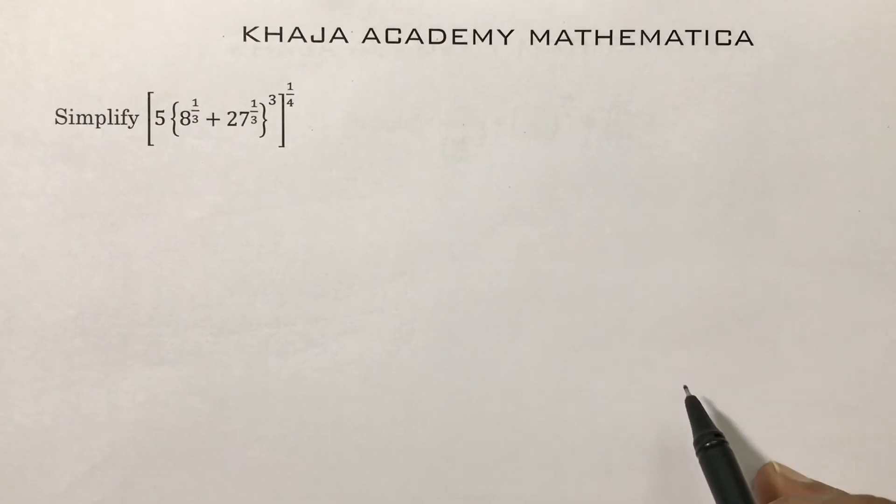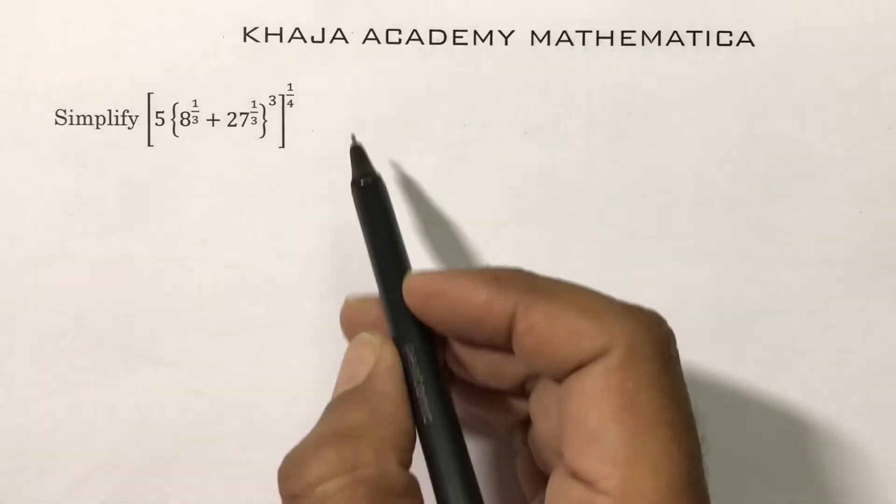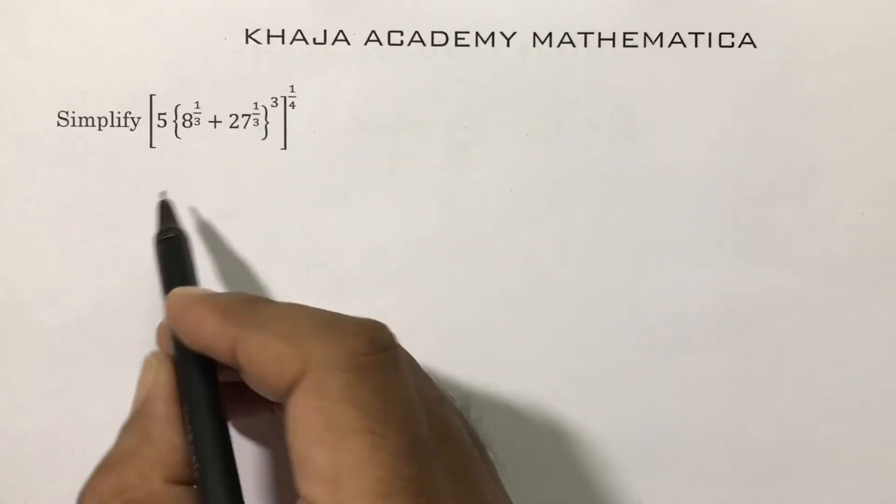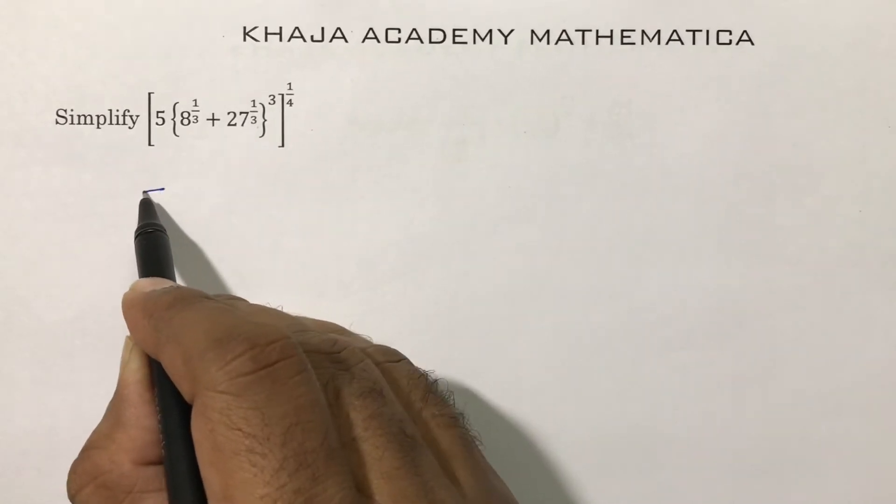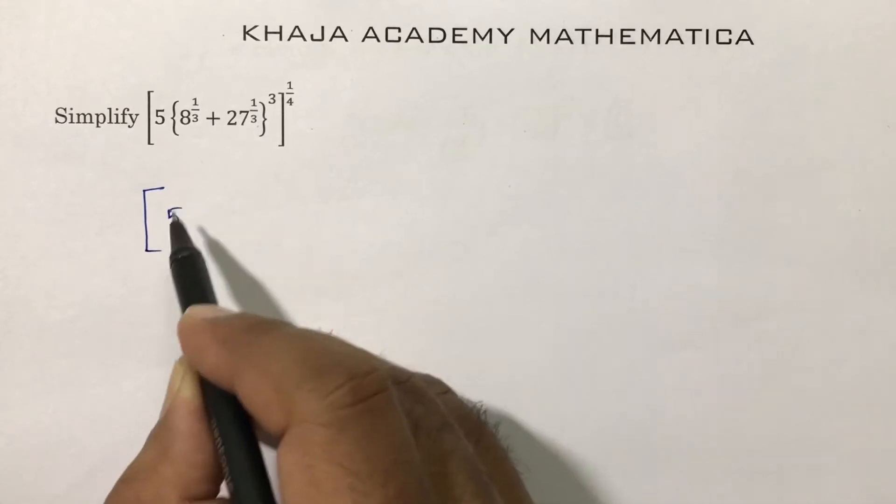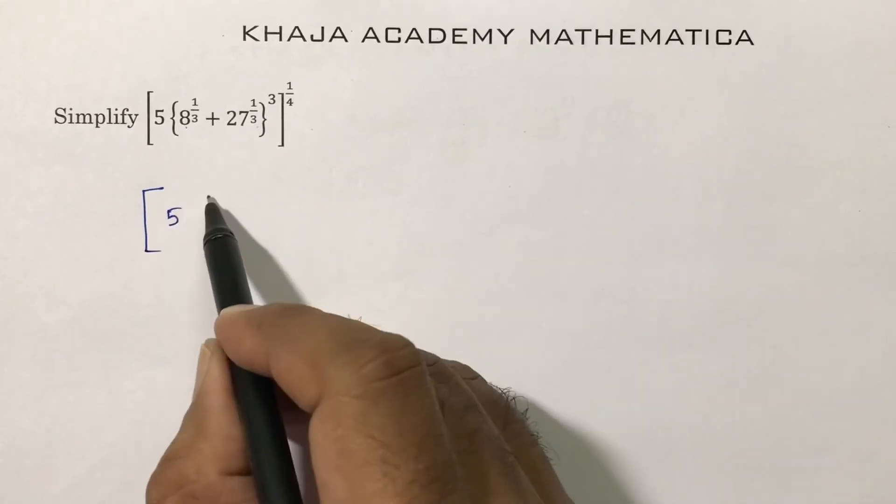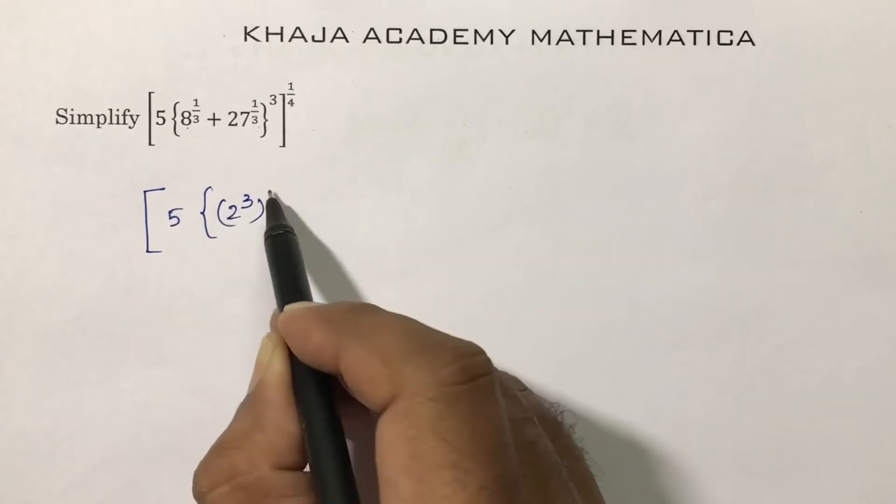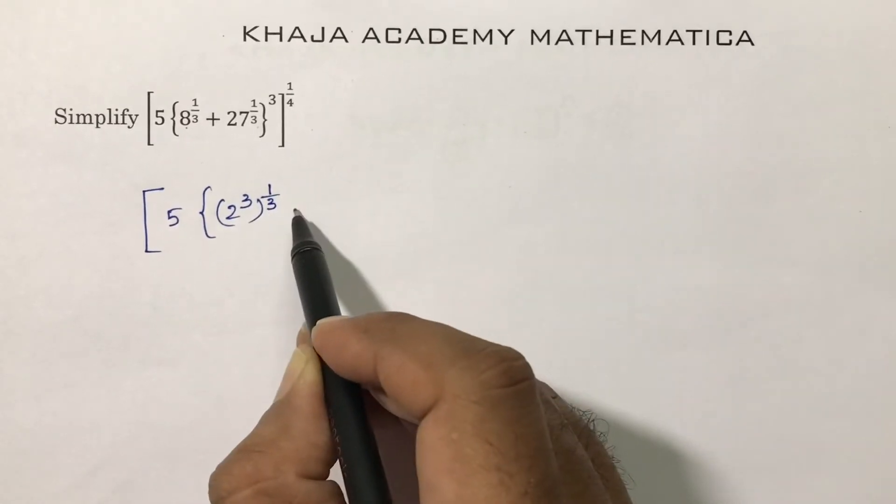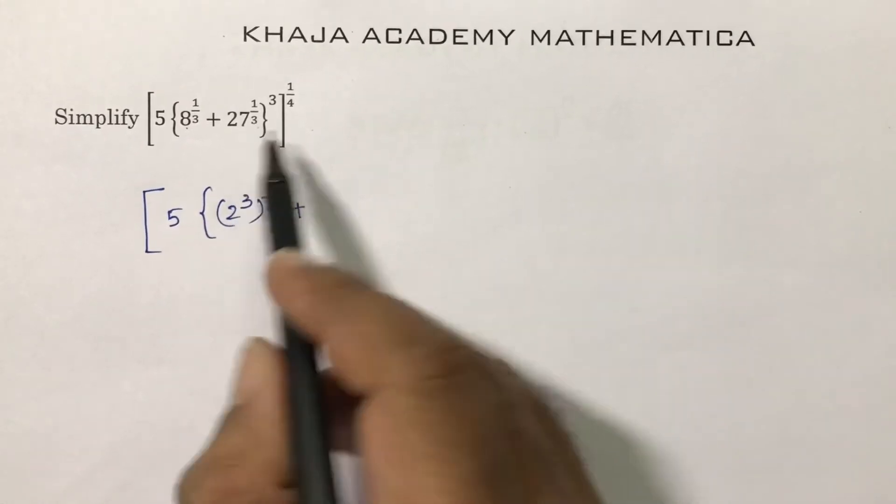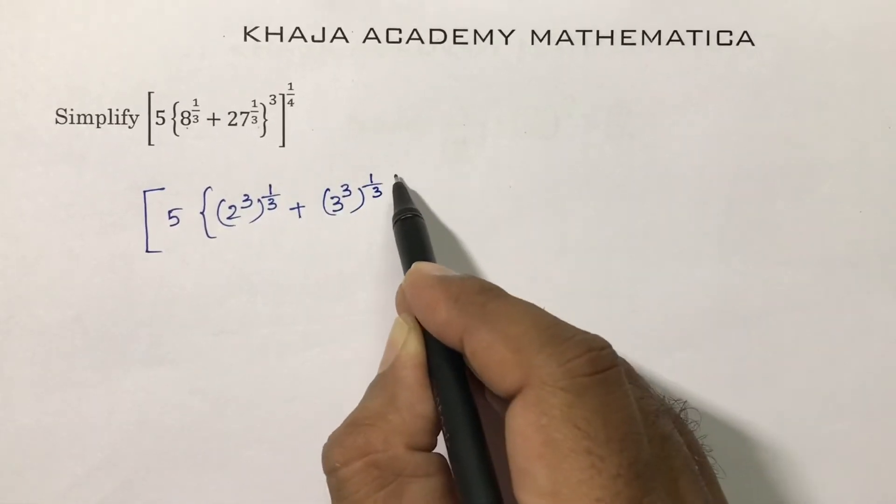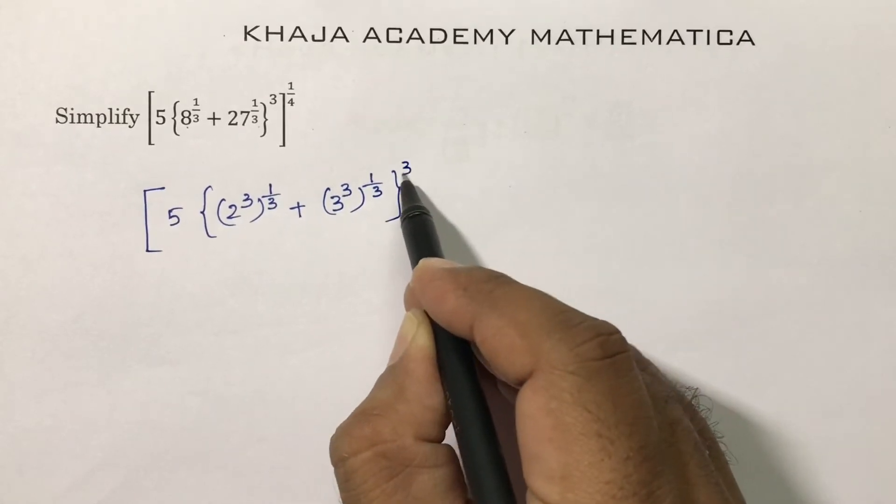This is a Class 9 real numbers important problem. We need to simplify [5(8^(1/3) + 27^(1/3))]^(1/4). So, 5 as it is, 8 you can write as 2 cube whole power 1 by 3, plus 27 you can write as 3 cube whole power 1 by 3. Here you have whole cube and the whole power 1 by 4.